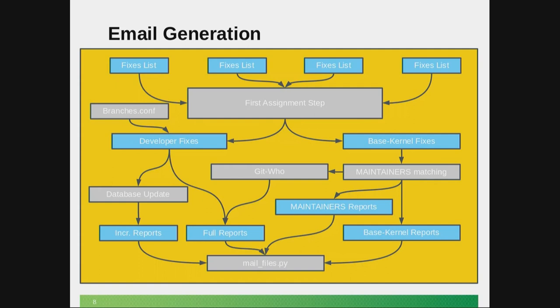In the end we have four kinds of reports: incremental reports, full reports, maintainer reports, and base kernel reports. These are all sent via a small Python script to the individual people. This happens via a cron job. The cron job for the incremental reports is executed every day, and for the other three reports it's executed once per week on Monday.